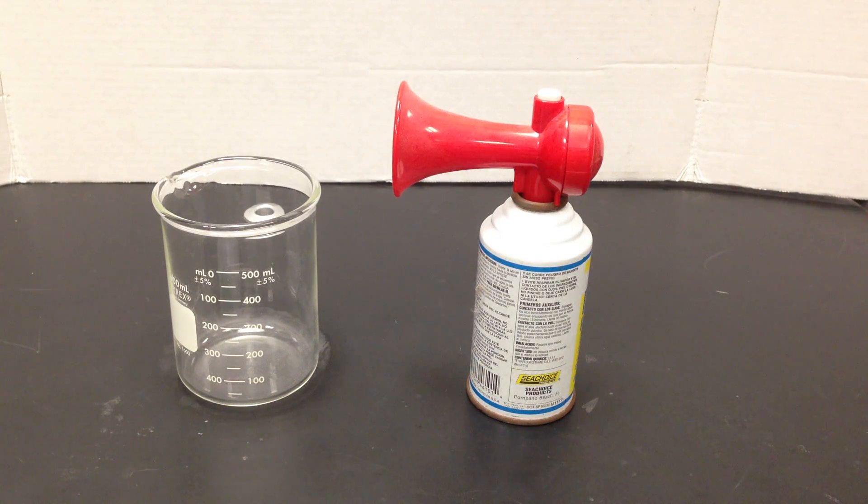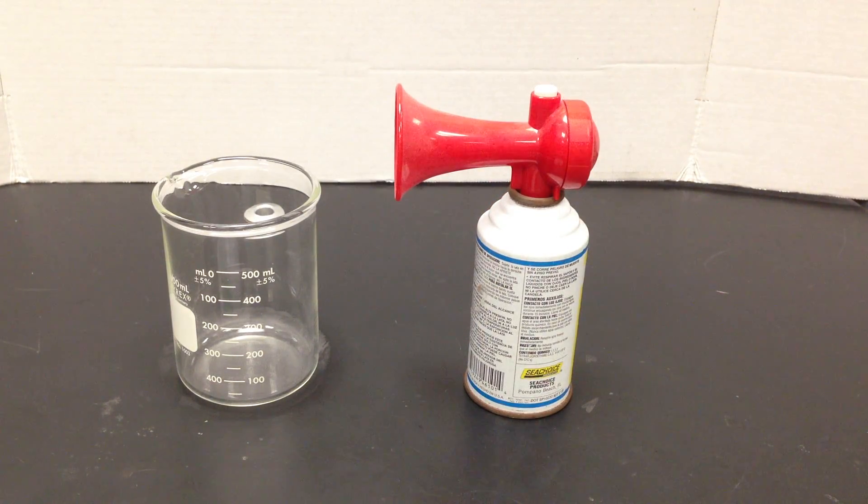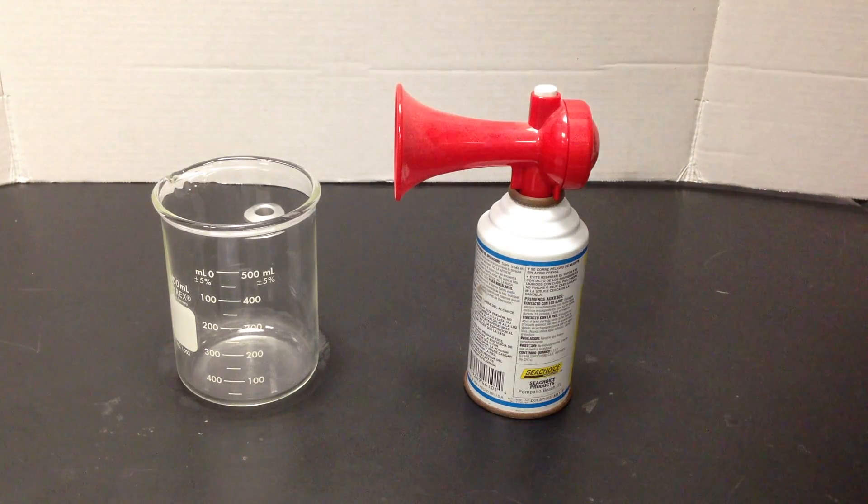Now, what I'm going to do is I'm going to basically expose this can to negative 196 degrees Celsius liquid, and that's liquid nitrogen, that's boiling point is much lower. So we're going to lower the pressure in that can. So let me put some liquid nitrogen in here.